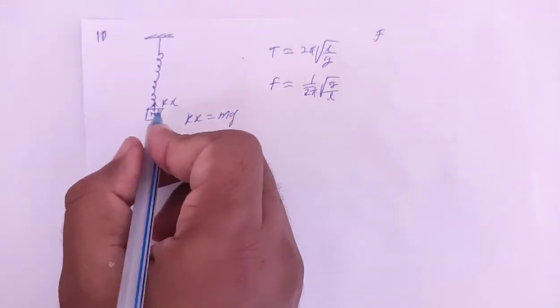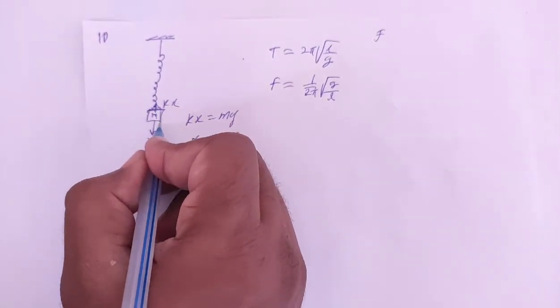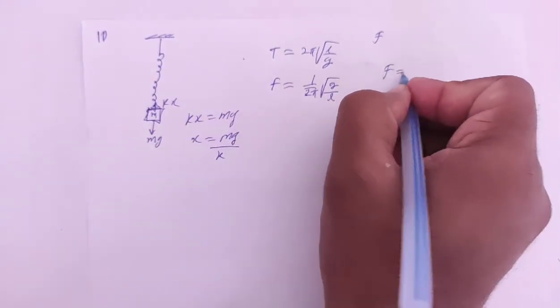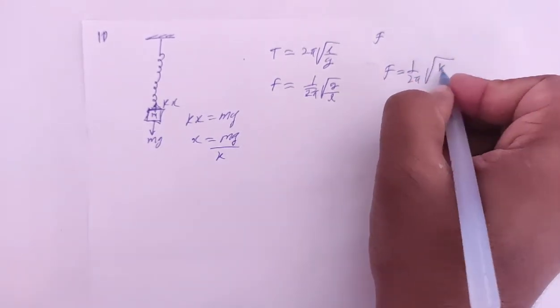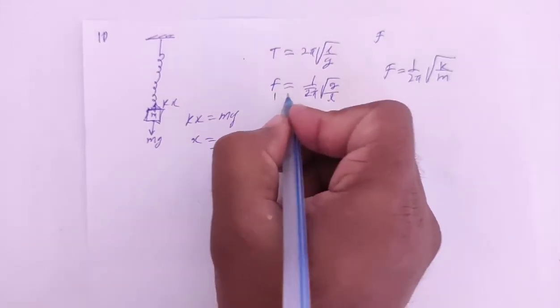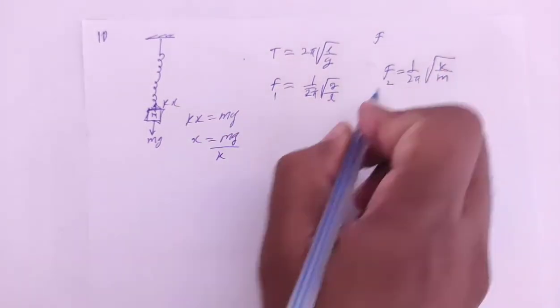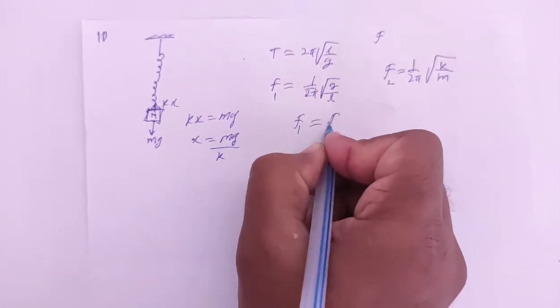And frequency will be equal to the spring-mass system. The frequency of spring-mass system is 1/(2π)√(k/m). This frequency is the same - you have simple pendulum here, spring-mass system here, frequency is same as the question says.